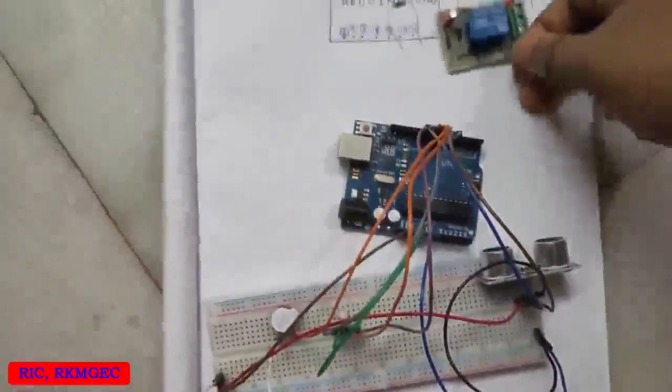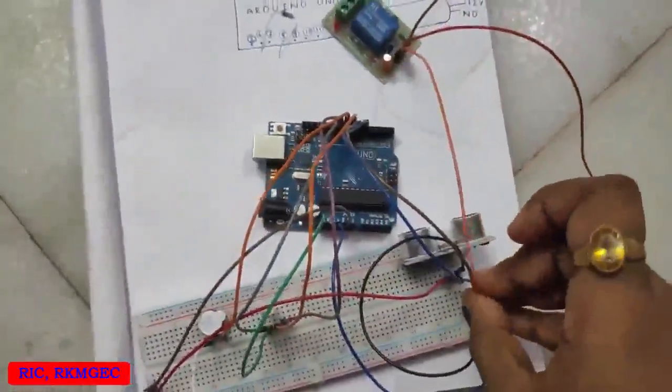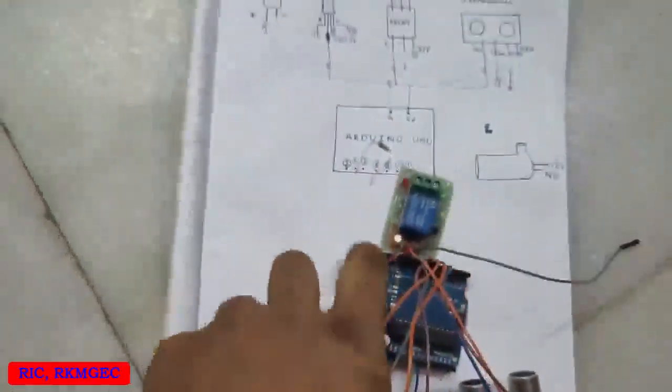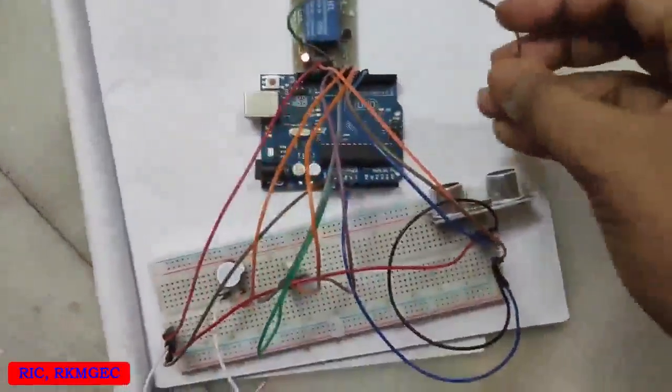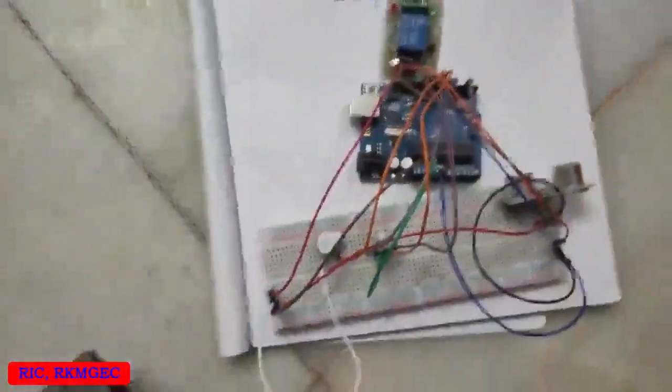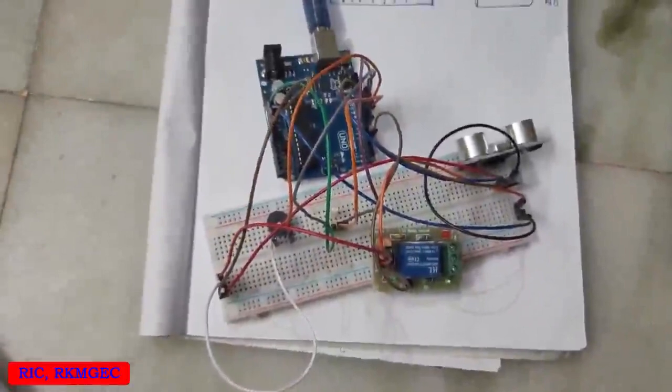Now let's finish the relay, connecting the 5 volt circuit to the 5 volt supply, the ground pin to the ground pin supply, and the input pin with pin number 2 of the Arduino. The circuit is ready so let me explain the working of the circuit.